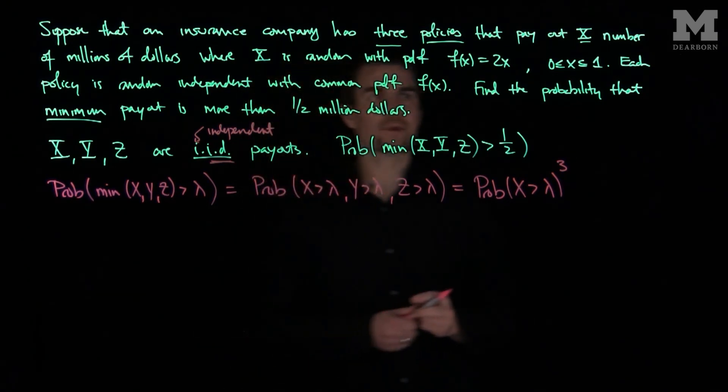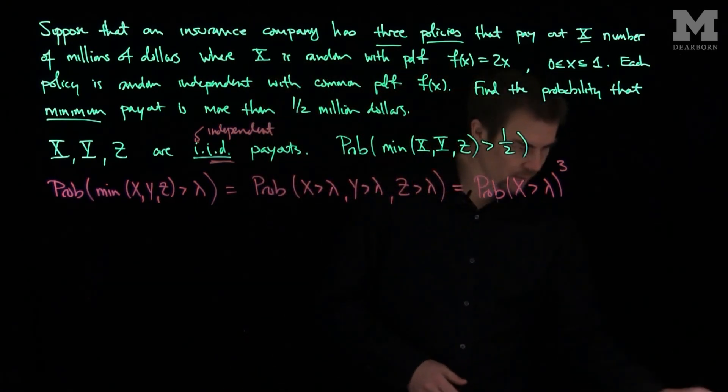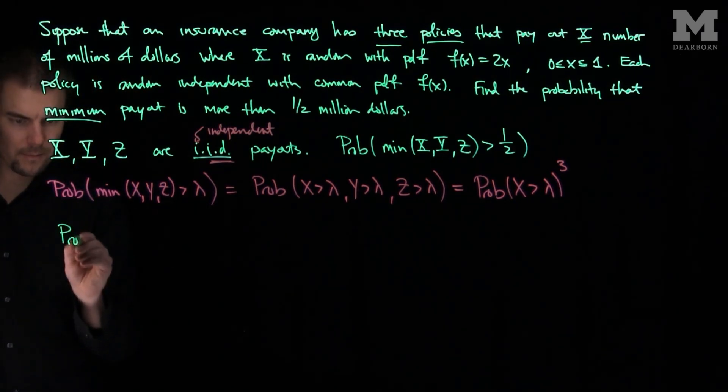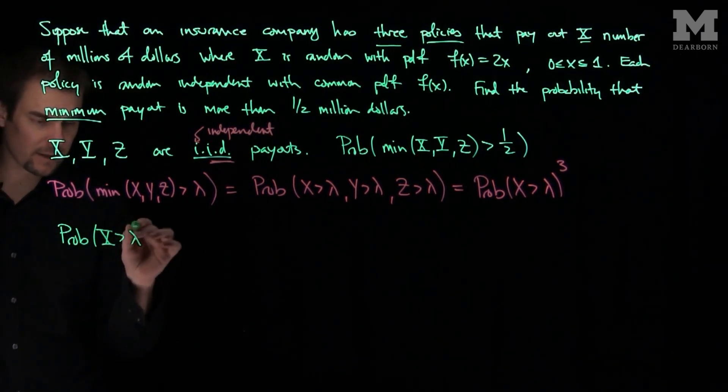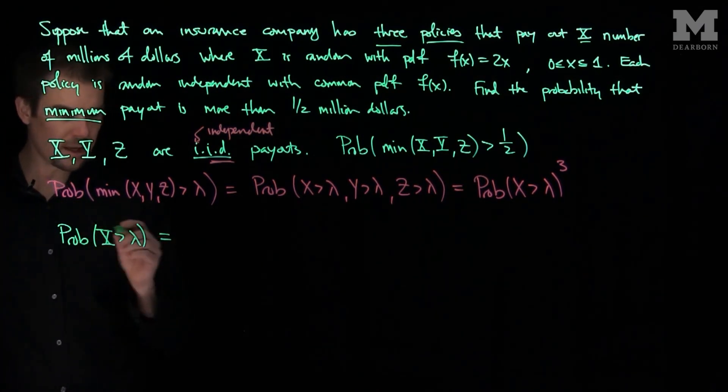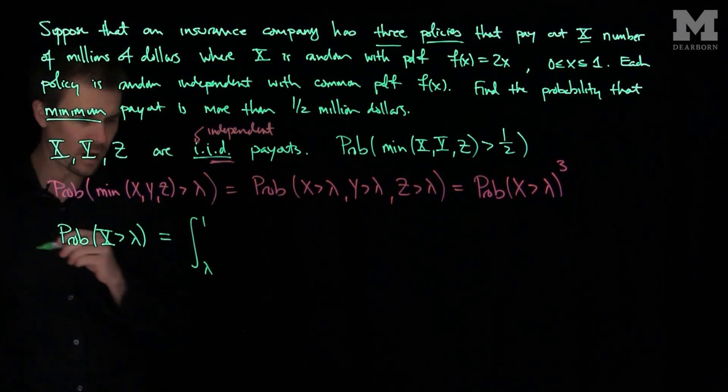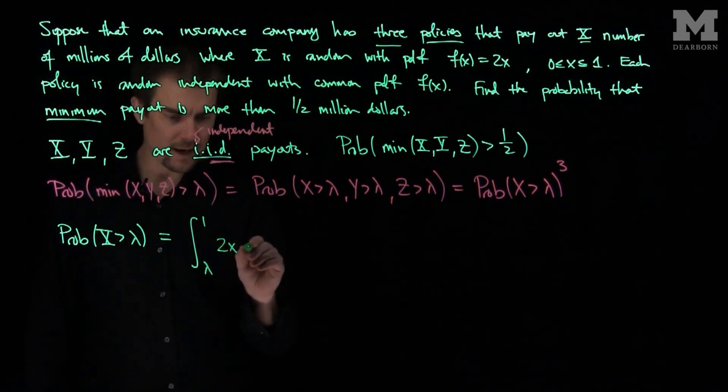And so now what we'll do is we'll find for this particular random variable what this probability is going to be. So the probability that X is bigger than lambda is going to be the integral from lambda up to 1 of 2x dx.